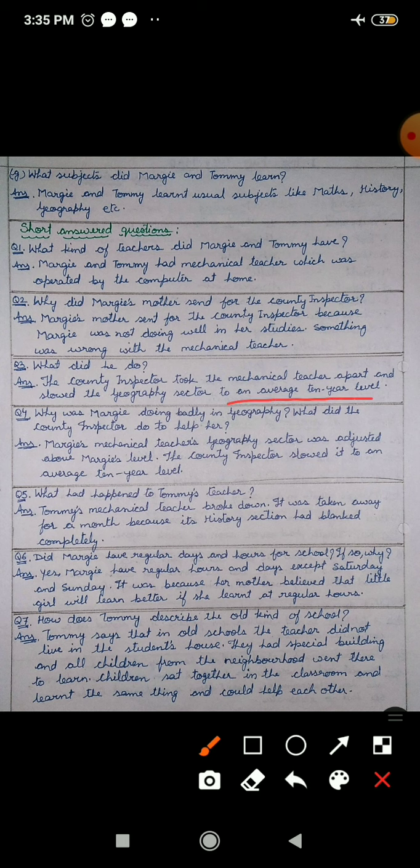Question number 4, why was Margie doing badly in geography? What did the county inspector do to help her? Margie, apne geography mein kharab kyon kar rahi thi? Aur county inspector ne usko help karne ke liye kya kiya? Margie's mechanical teacher's geography sector was adjusted above Margie's level. Kyonki uske mechanical teacher ka jo geography sector tha, wo uske level se, uske 10 years ke level se upar tha, jyada bade bachchon ko padhaane ke liye set tha. The county inspector slowed it to an average 10 year level. County inspector ne Margie ko help karne ke liye uska level slow kar diya tha.